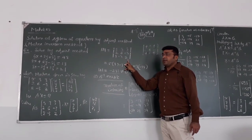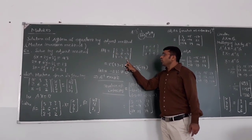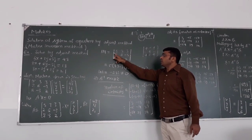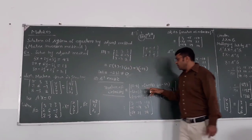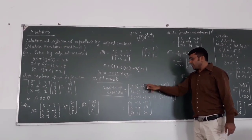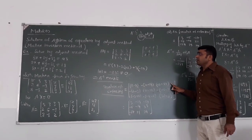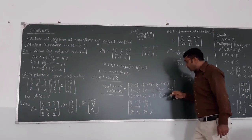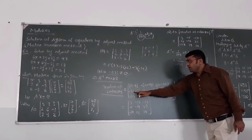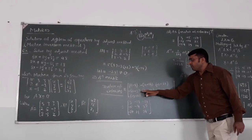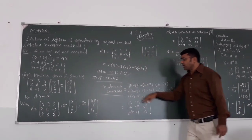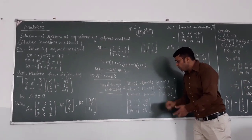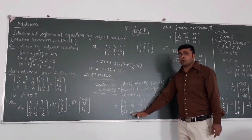Similarly for the third element 3 (positive sign): leave its column and row, cross-multiply the remaining elements. We get minus 6 into minus 48 for one term. Continue calculating the 4th, 5th, and 6th cofactors, all with the appropriate sign convention. After simplifying all nine cofactors, we have the complete matrix of cofactors.